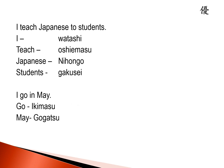Let's try a small quiz now. I teach Japanese to students — let's try to translate this into Japanese. I is watashi, teach is oshiemasu, Japanese is nihongo, and students is gakusei. You have to put the right particles in the right places and finish the sentence with the verb oshiemasu. Similarly, another sentence: I go in May. Go is ikimasu, May is gogatsu. Can you tell me how this would sound in Japanese? If you know the answer, post it in the comment section below.